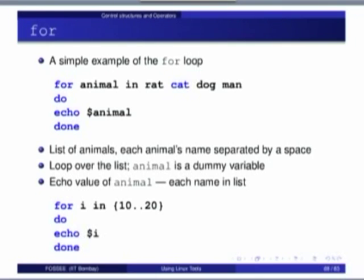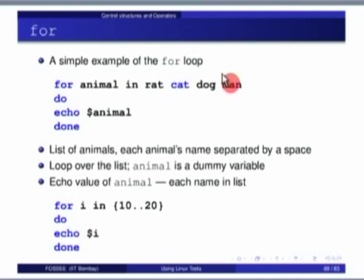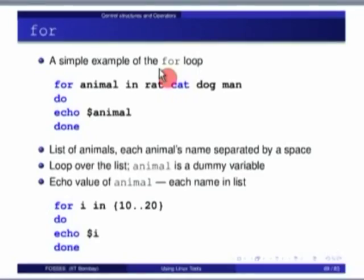There is also a for loop: 'for variable in list'. For example: 'for animal in rat cat dog man; do ... done'. It expects: for variable in a list — the list can be any length. Note that 'cat' is being highlighted in the slide because LaTeX's listings package recognizes it as a bash command and colors it automatically — it is doing this a little too blindly.